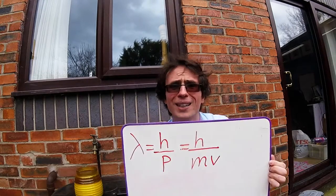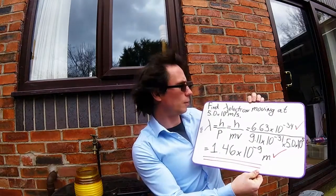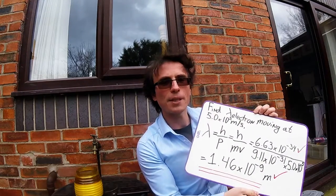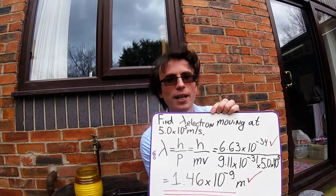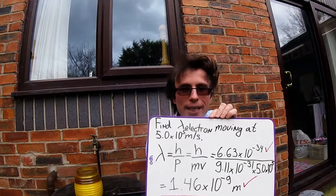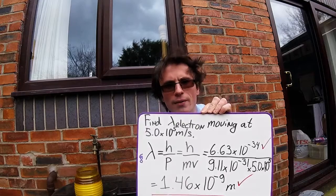Okay, well, let's apply this to a simple problem. We've got an electron moving at 5 times 10 to the 5 meters per second. And what we need to do is find out the de Broglie wavelength.